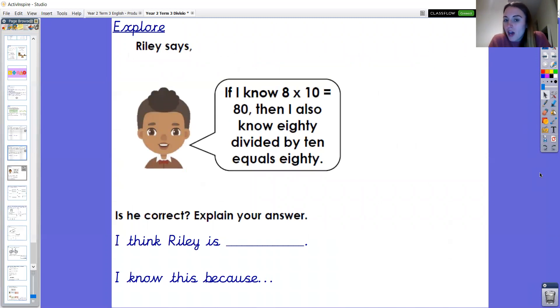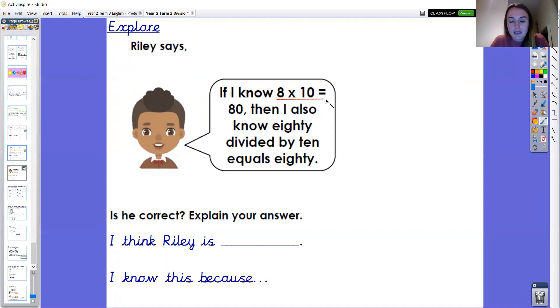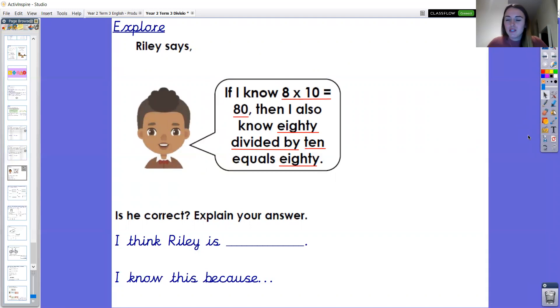Okay so let's move on to another explore question together. Riley says if I know 8 times 10 equals 80 then I also know 80 divided by 10 equals 80. Is he correct? Explain your answer. Okay so first of all I'm going to think about the key information. If I know 8 times 10 equals 80. So that's Riley's multiplication fact he's using to help him. Then I also know 80, it's the dividend, divided by 10 equals 80. So 80 is the quotient. What do you think year two? Please pause the video here to discuss using the sentences I think Riley is, I know this because. Okay so please pause the video here and engage in your mathematical discussion.